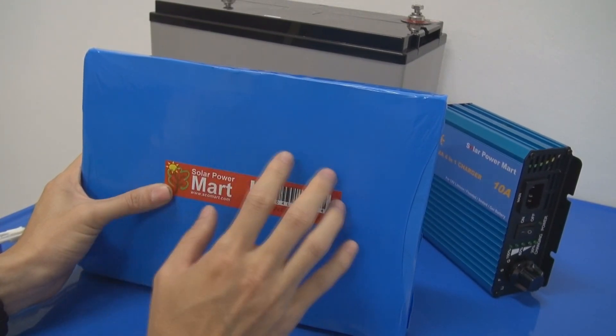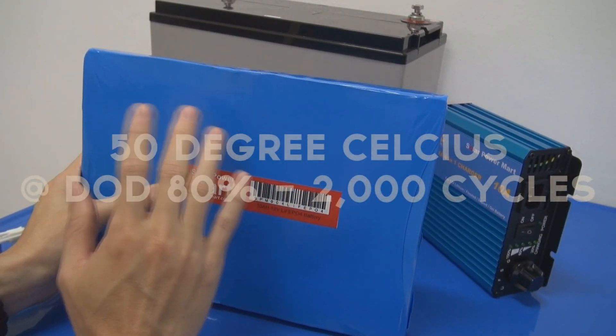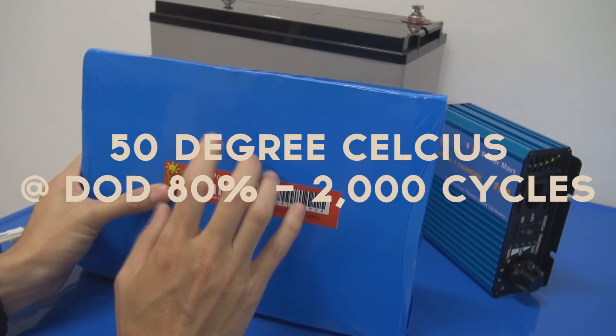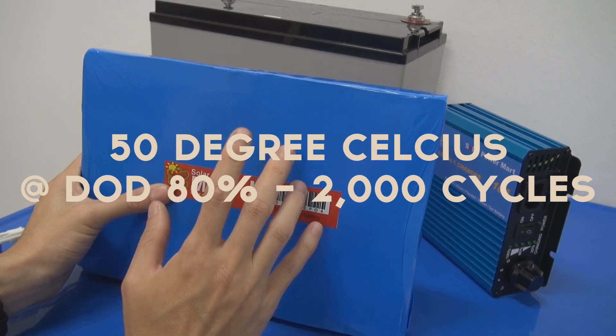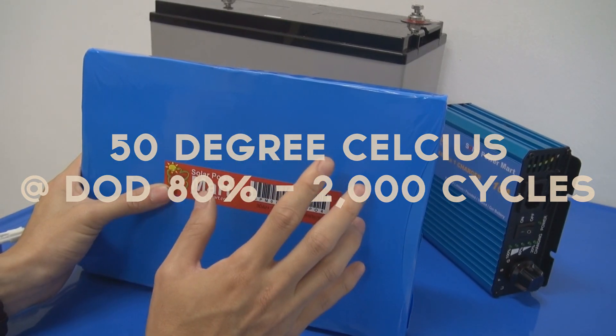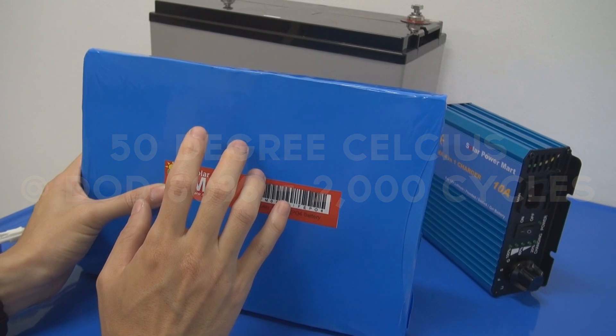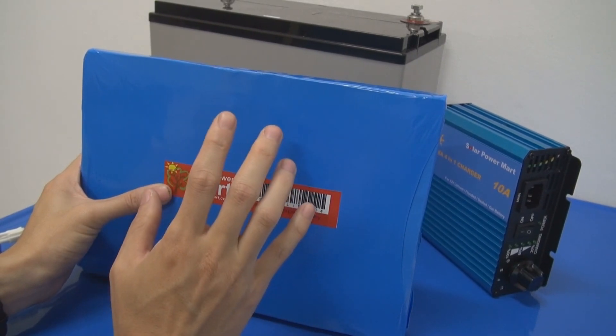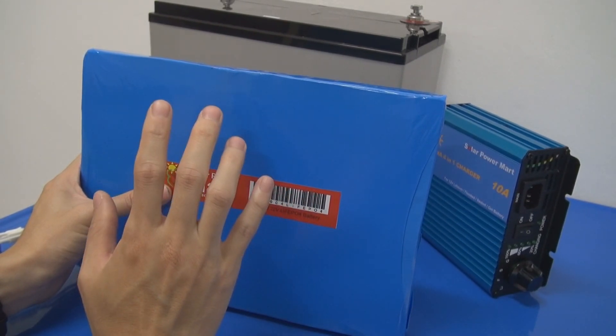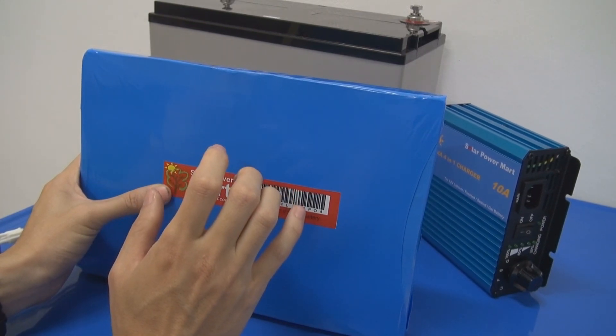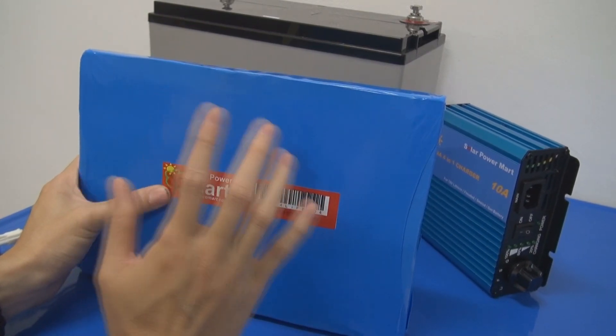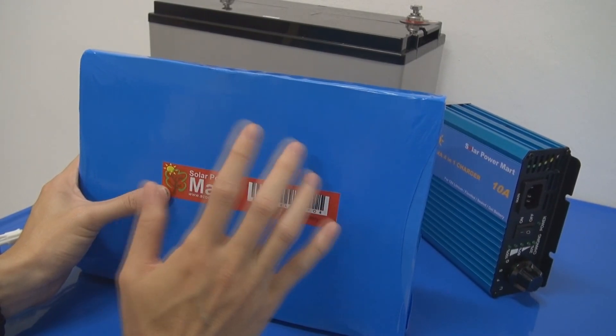So even if you use this battery at roughly around 50C and do a DoD of 80%, it still will give you 2,000 cycles. In other words, more than five years. So one thing good about lithium battery is it's very good with temperature. That means it performs very well in hot conditions.